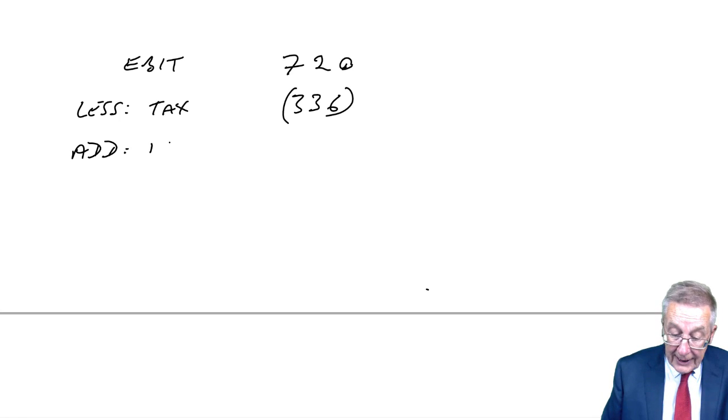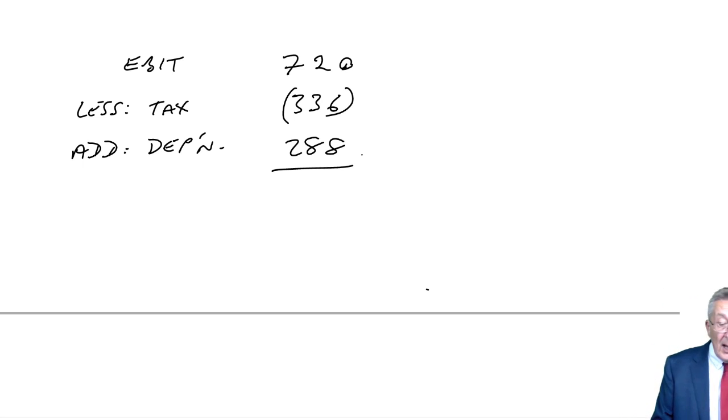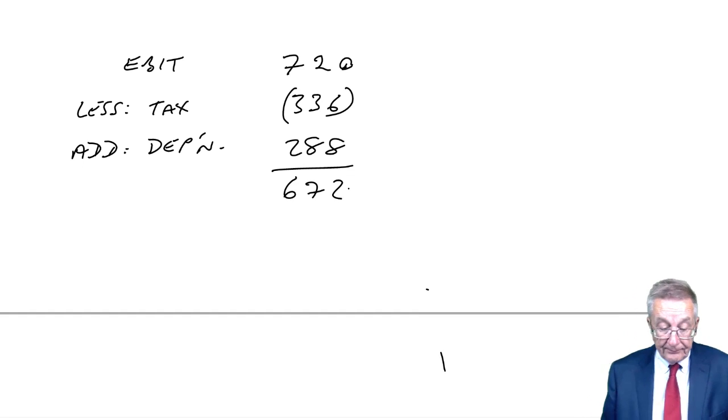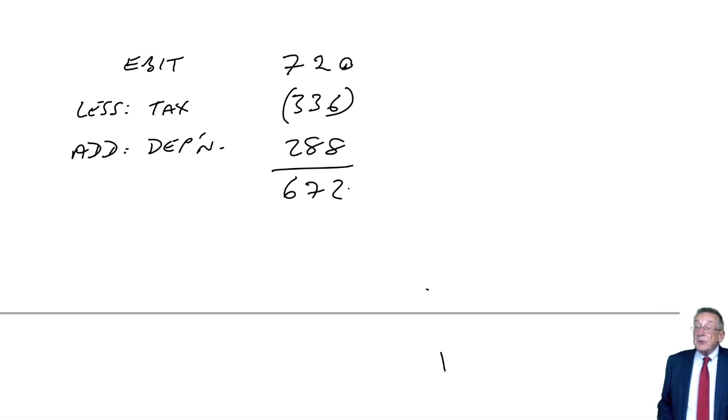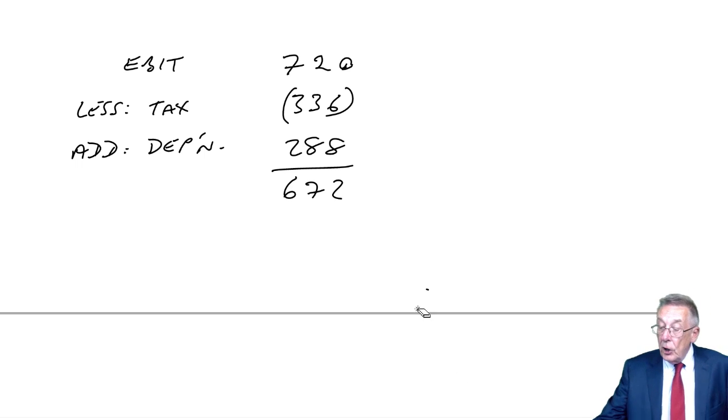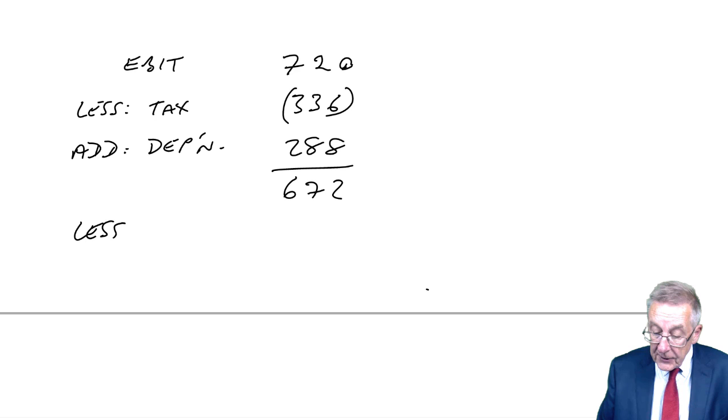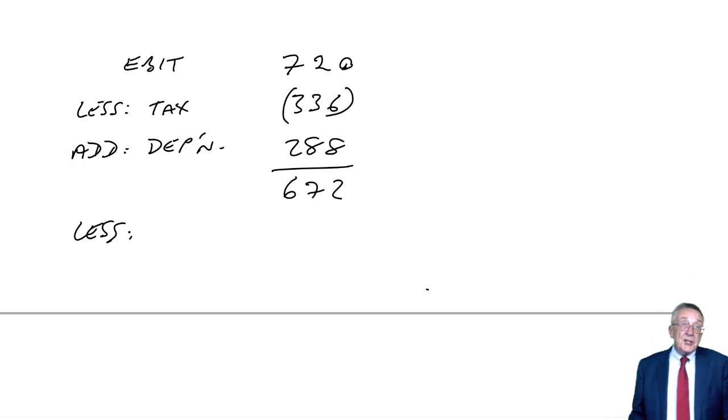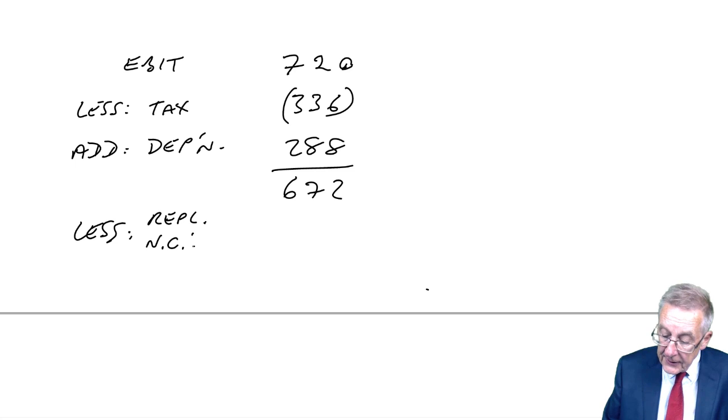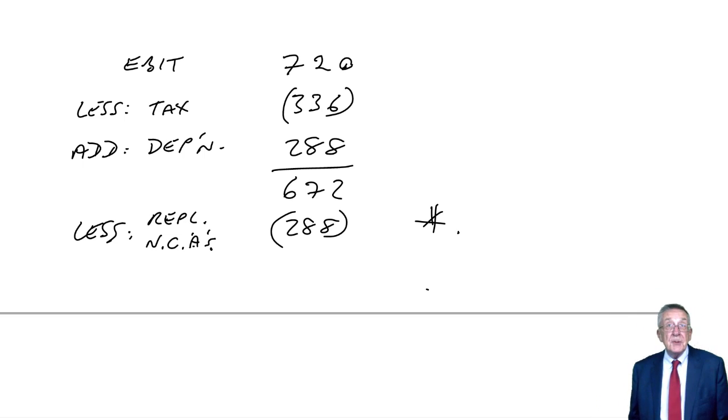We add back depreciation, it's not a cash flow, 288. So far, what have we got? 720 minus 336 plus 288, that's 672. What else? Just like I said before, your examiner always assumes, but it is an assumption unless you're specifically told, that we need to spend an amount of money replacing non-current assets equal to the depreciation charge. So replacement of non-current assets, 288.